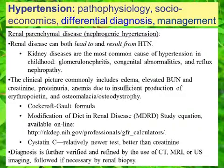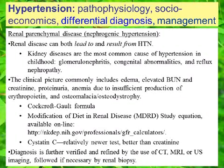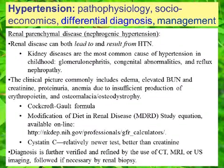Renal parenchymal disease leads to what we call nephrogenic hypertension. Renal disease can both lead to and result from hypertension. Kidney diseases are the most common cause of hypertension in childhood. We need to consider glomerulonephritis, congenital abnormalities, and reflux nephropathy.